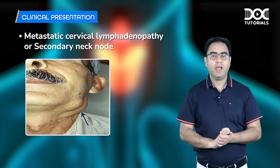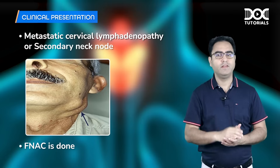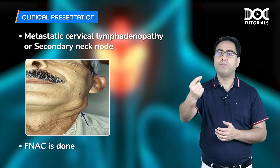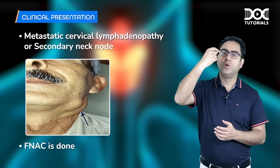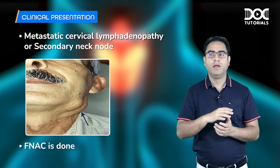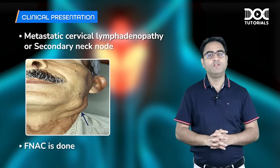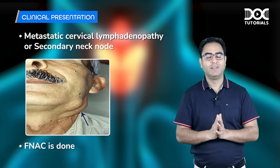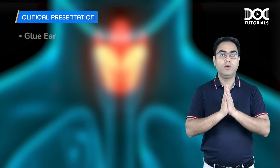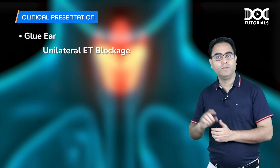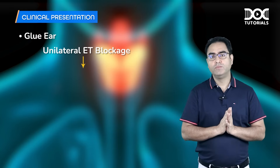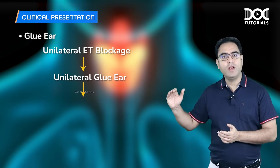The patient comes with neck masses; FNAC shows metastatic squamous cell carcinoma. Retrospectively, endoscopy reveals an ulceroproliferative growth in the nasopharynx, confirmed as malignancy on biopsy. The second symptom is glue ear — this cancer is right above the Eustachian tube opening, blocking it within months, leading to unilateral glue ear and unilateral conductive hearing loss.